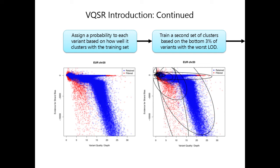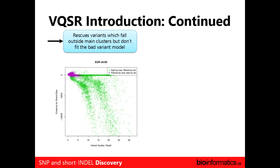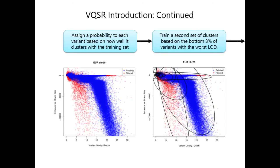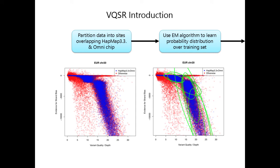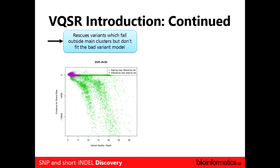VQSR uses an expectation maximization algorithm to learn what the most probable areas are for the truth data. It assigns a probability to each variant based on how well it clusters to that training set. It then throws out the three percent worst variants and trains some more. In the end, only the purplish variants that lie outside the truth cluster are identified as most likely erroneous. It does this automatically, running several iterations of the expectation maximization algorithm, and comes up with filters you can then apply to your VCF files.